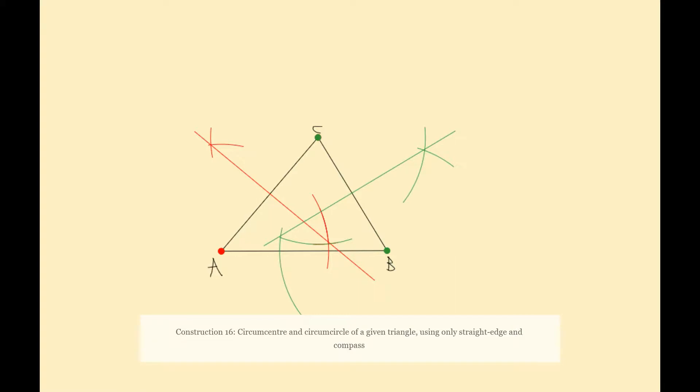And now we have constructed our circumcenter where those two lines are intersecting. That's known as the circumcenter. So I'm going to put a dot there to denote that. And it is here. Okay so there's my circumcenter.